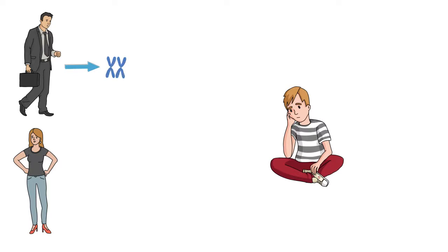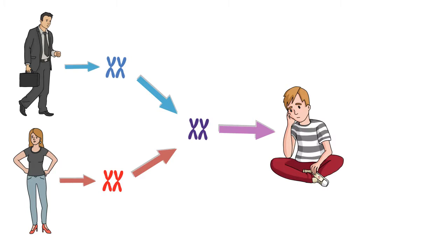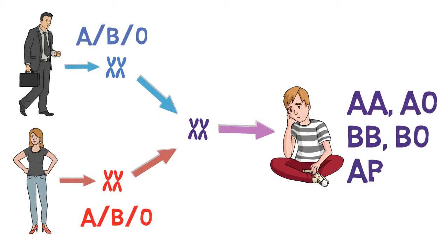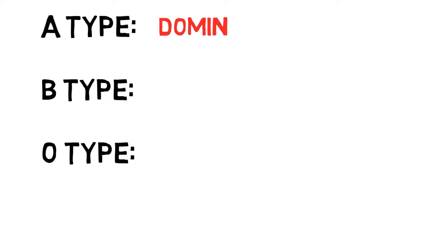Since you receive genetic material from both your father and your mother, you receive two blood types. In this transfer, you will receive an A, B, or O blood type from each parent. The resulting blood type will correspond to what each parent provided. Of these blood types, A and B are considered dominant genes, while O is considered to be recessive.